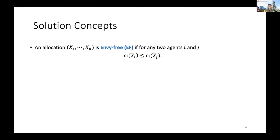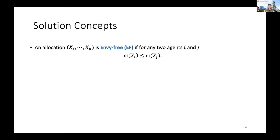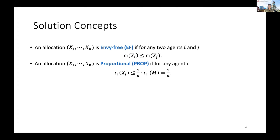Two of the most widely accepted solution concepts about fairness are envy-freeness and proportionality. For envy-freeness, it means that for every agent i, she does not envy any other agent g's bundle. Because the items are chores, agent i's cost for her own bundle xi is no greater than her cost for any other agent g's bundle. For proportionality, every agent i's cost for her own bundle is no greater than 1/n of her cost for all the items. For normalized valuations, this is just 1/n — if everyone's cost is no larger than 1/n, the allocation is proportional.